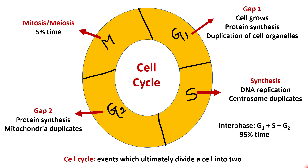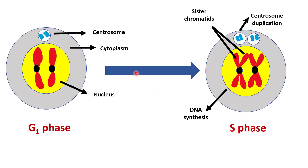In the last lecture we talked about the cell cycle. We have already seen that DNA duplication takes place in the S phase of interphase. In this phase each chromosome contains double the amount of DNA, and we can call them sister chromatids.